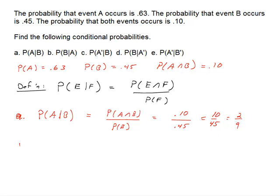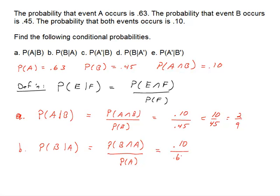Part B is very similar — we just use the definition. Now I'm looking at the probability of event B occurring given that A has already occurred. B given A is the probability of the intersection again. The nice thing about the intersection is that the order doesn't matter — A and B is the same as B and A, it's the same overlap region in the Venn diagram. So we have 0.1 over 0.63, which gives us 10 sixty-thirds, and that doesn't simplify.